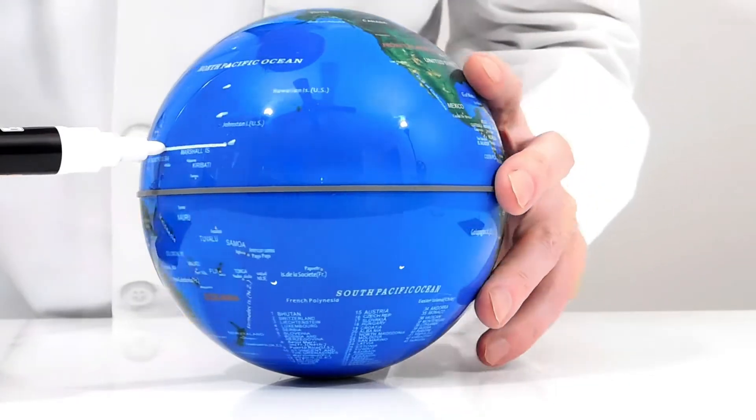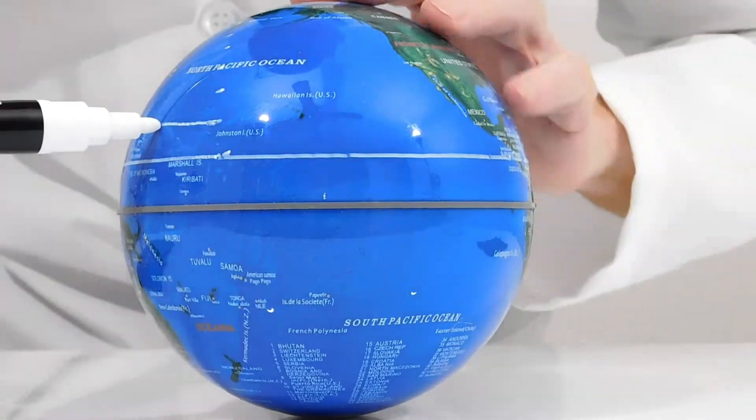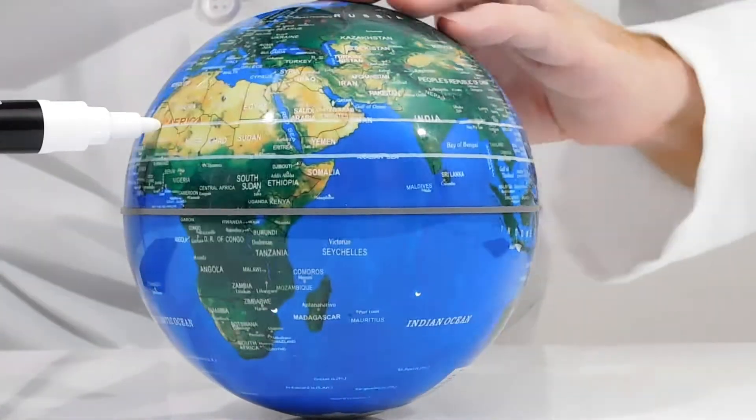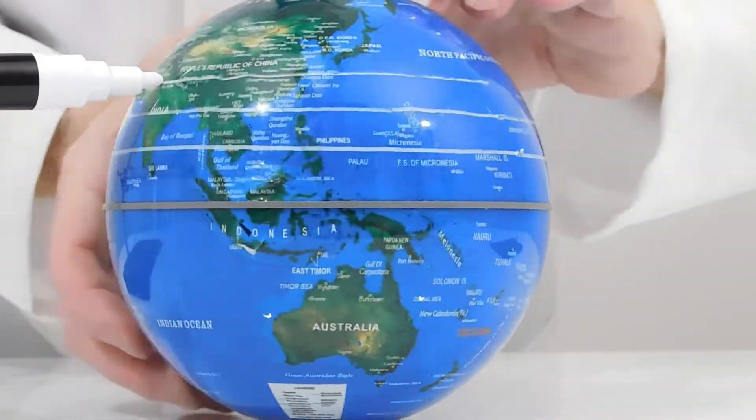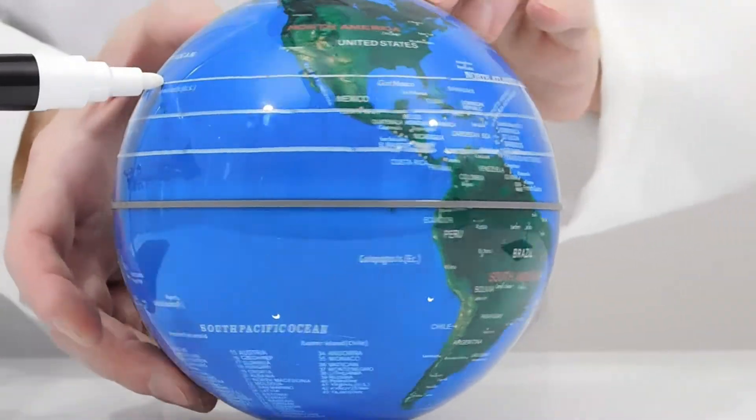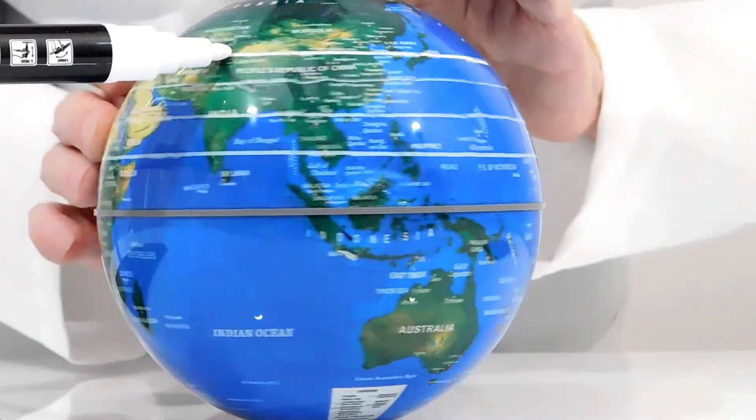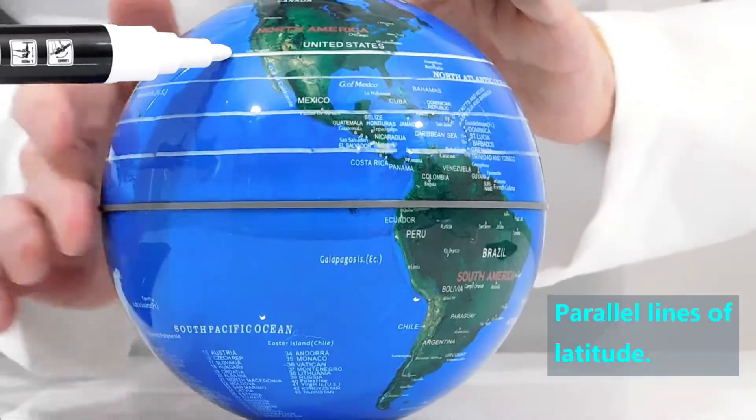Next, we set a pen at each of these levels while rotating the globe. Since this is such a small globe, we'll only draw a few latitude lines. As we draw these, please note how each line is parallel to the others. That's why sometimes the latitude lines are called parallel lines of latitude.